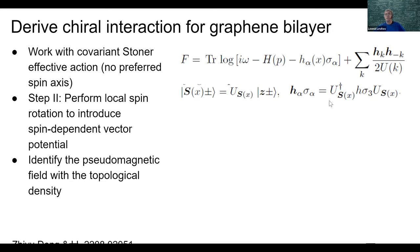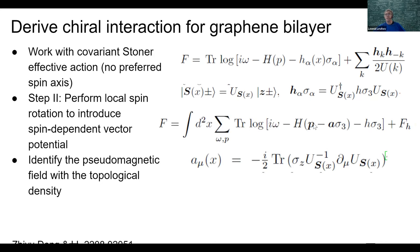When we perform the spin rotation, a spin-dependent vector potential is generated. The free-particle Hamiltonian is altered by shifting p by some vector potential A, which will be spin-dependent and proportional to the gradient of the rotation angle. Now the ordering field is aligned with the z-axis, but the free-particle Hamiltonian couples to this vector potential, which in general is non-Abelian.